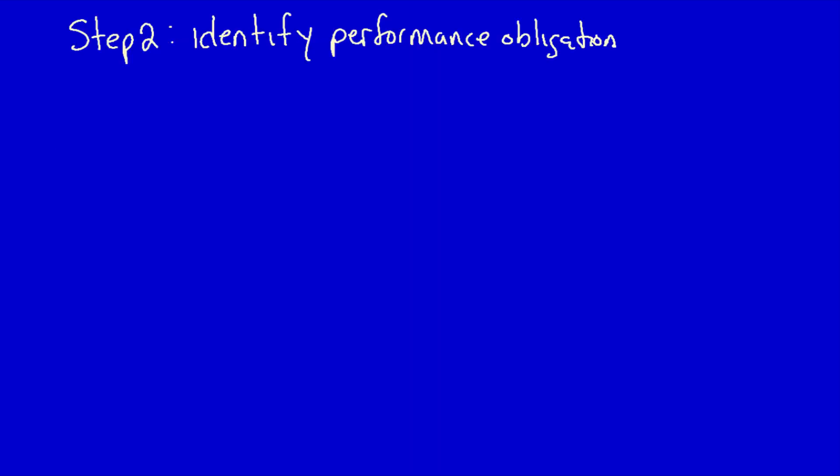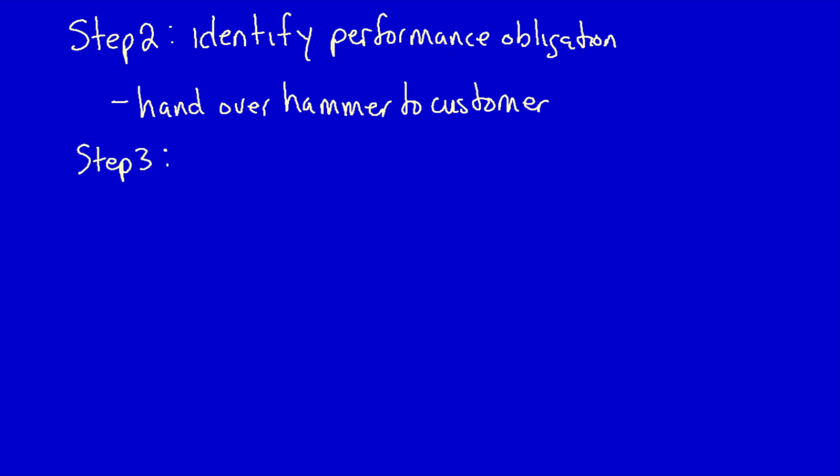Step two: the performance obligation is the handing over of the hammer to the customer. Once the hardware store has done that, their performance obligation has been met. Move on to step three: determine the price. We know that the transaction price is the amount the customer is going to pay for the hammer.